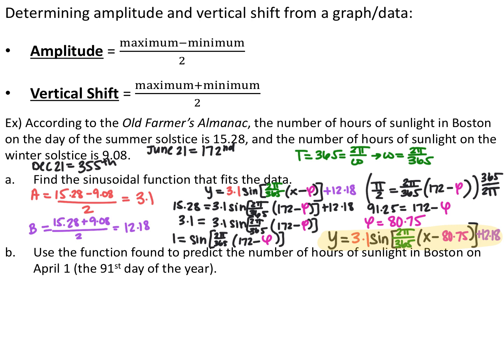The function modeling hours of sunlight in Boston is y = 3.1sin[(2π/365)(x - 80.75)] + 12.18. Using this to predict sunlight on April 1st (day 91), we plug in x = 91 and get approximately 12.724 hours of sunlight.